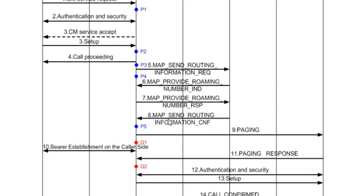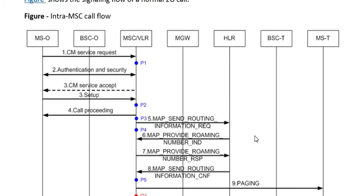In response to the Send Routing Information request, the HLR replies to the MSC with a Send Routing Information confirmation message. Messages P3 and P5 are interrelated, while messages P6 and P7 are interrelated. Once the MSC receives the Send Routing Information confirmation, it analyzes the message and determines that the called number belongs to the same MSC.